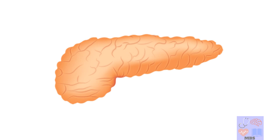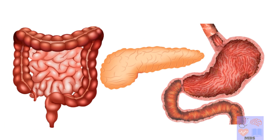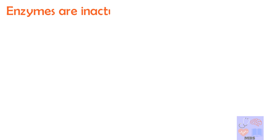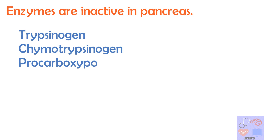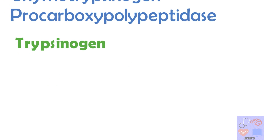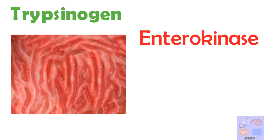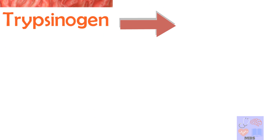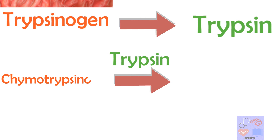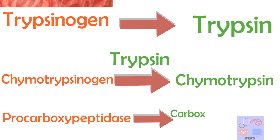A key question arises: since the pancreas is made of protein and lacks a mucosal layer like the stomach and intestines, why don't trypsin and chymotrypsin digest the pancreas itself? The reason is that all pancreatic enzymes are inactive within the pancreas. They exist as zymogens — trypsinogen, chymotrypsinogen, and pro-carboxypeptidase. They are activated only after entering the intestine. Trypsinogen is activated by the enzyme enterokinase, secreted by the intestinal mucosa. Once trypsinogen is converted to trypsin, trypsin then activates chymotrypsinogen into chymotrypsin, and similarly activates pro-carboxypeptidase.